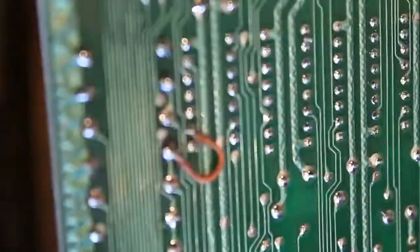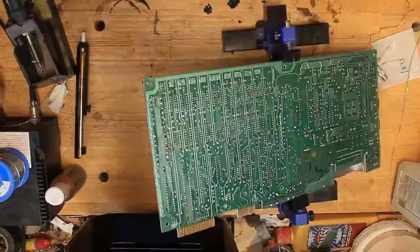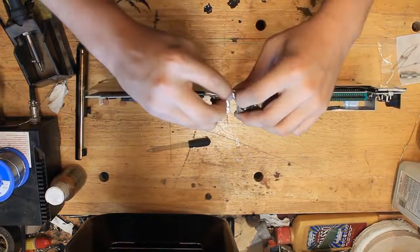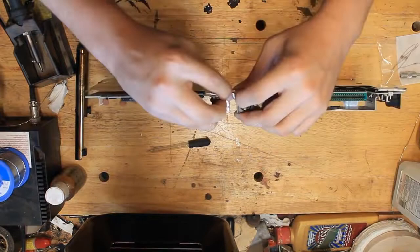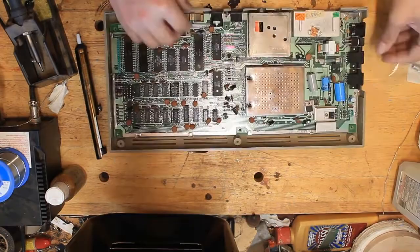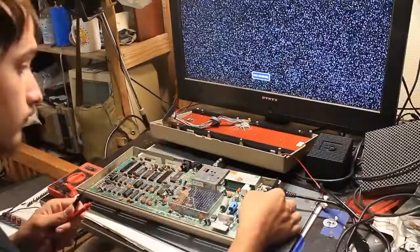Alrighty everybody, let's get started. So I went and replaced the toasted 7406 and its pull-up resistors on the Commodore 64, mended the switch, and looked everything over, but something was still drawing way too much current. Nearly a direct short.